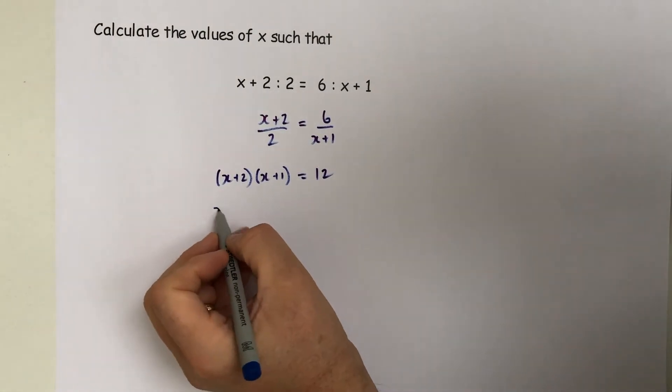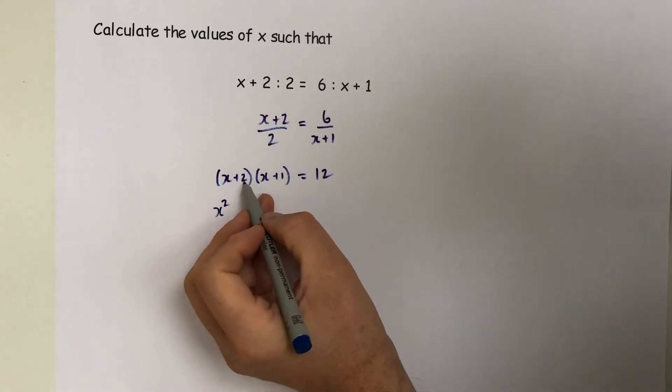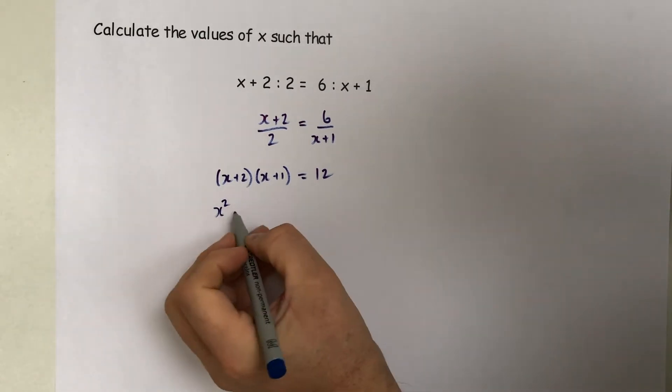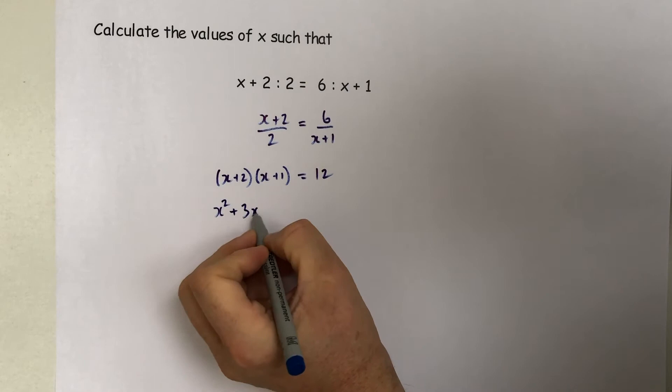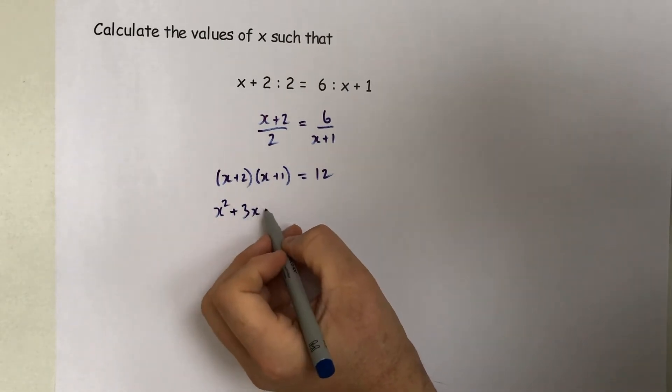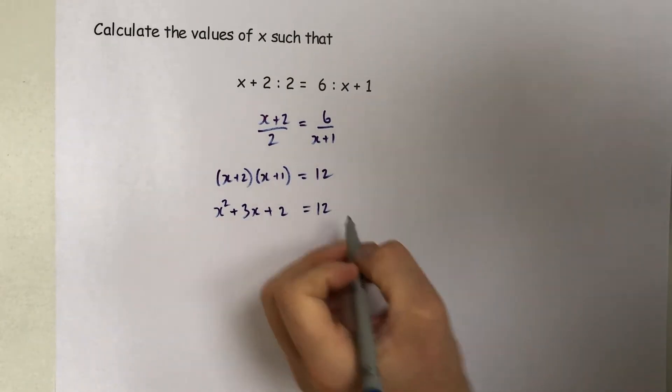If we remove the bracket, we get x squared, we get 2x, we get 1x so we get 3x, and we get 2 times 1, we get 2, and that must equal 12.